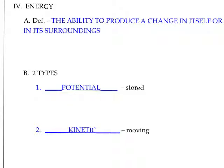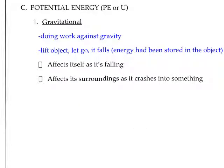We are going to discuss these in a bit more detail, but for today we're going to concentrate just on potential energy. There are six types of potential energy, and in our equations you will see potential energy represented by PE or by the letter U. Recognize them both as the variable for potential energy.